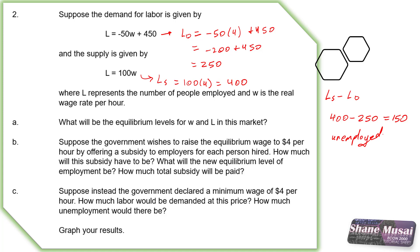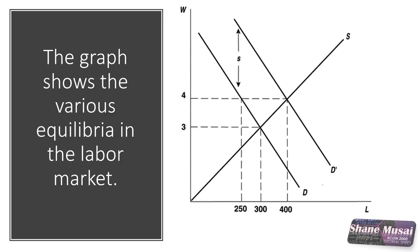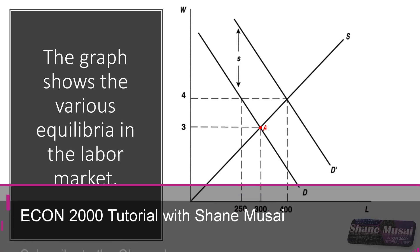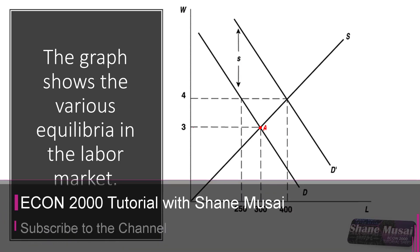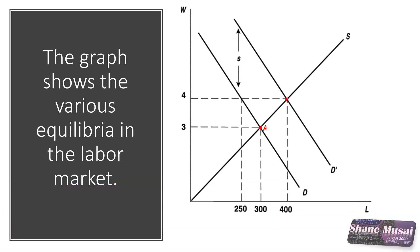The last part asks to graph your results. The graph covers Parts A, B, and C. For Part A, the equilibrium point is at labor of 300 and wage of $3. For Part B, the equilibrium shifts to labor of 400 and wage of $4. For Part C, at a minimum wage of $4, labor demanded is only 250 while labor supplied is 400, creating the gap on the graph that represents the 150 unemployed workers due to the minimum wage floor.